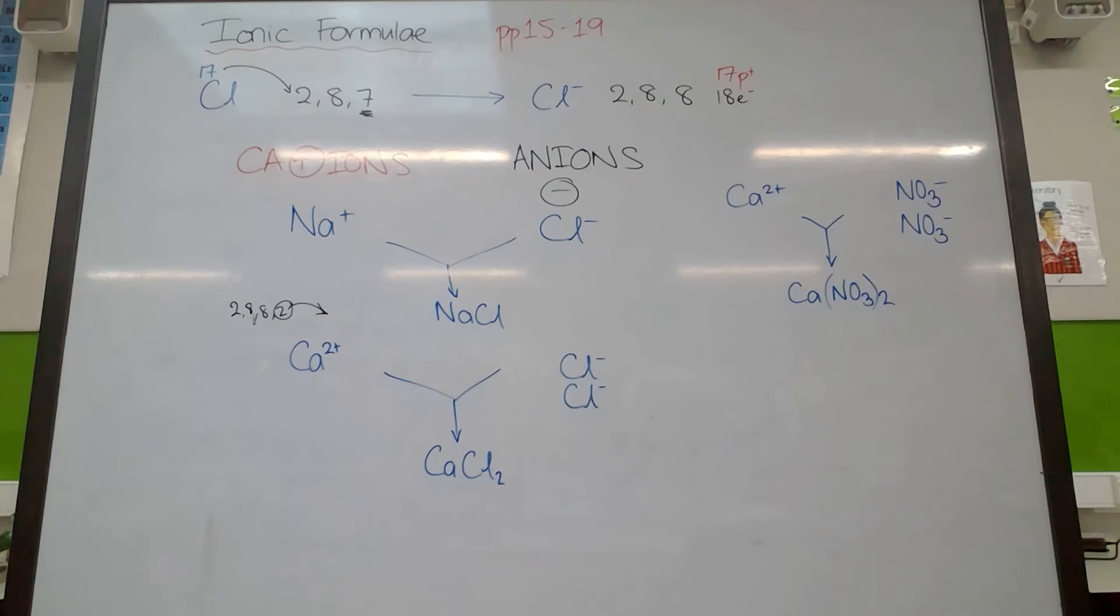We have a little trick for working these out, because they can get a bit more complicated, like when there's a two positive charge on something, a three minus on the other, for example. And so we have a little trick called drop and swap that we can use. I'll quickly show you that with calcium nitrate.